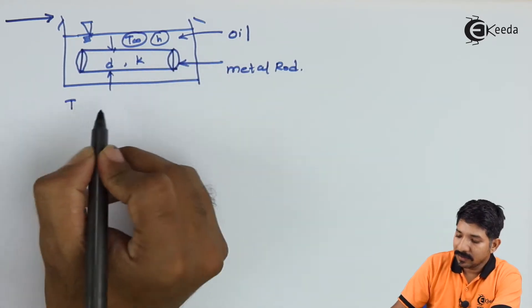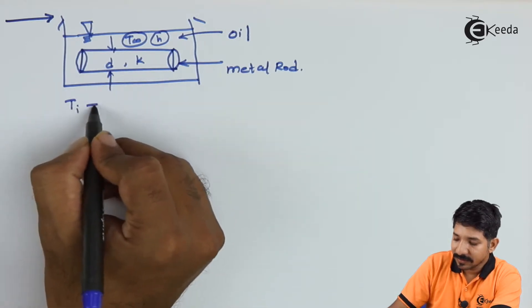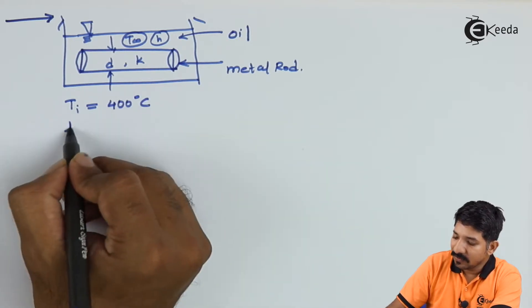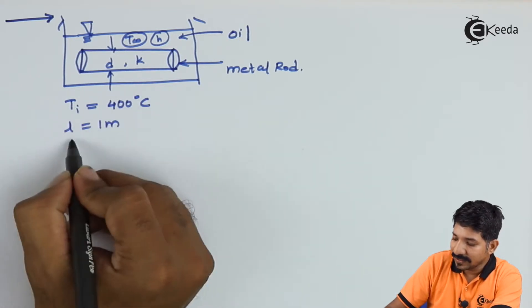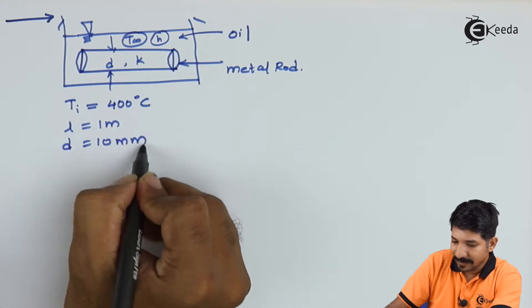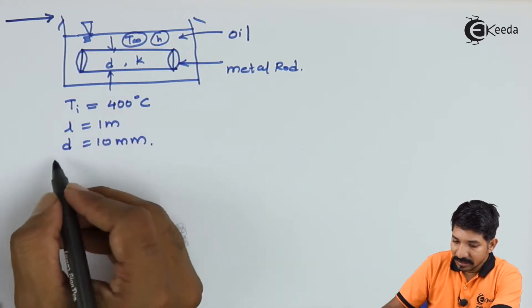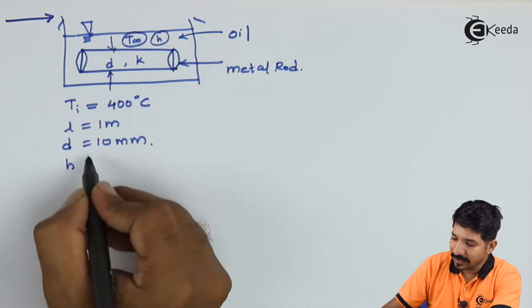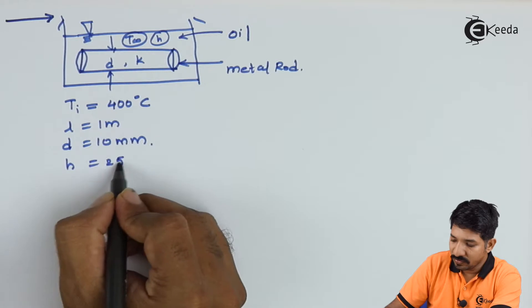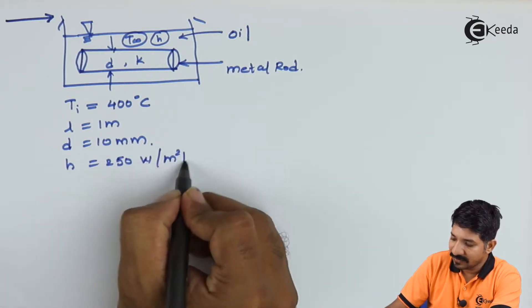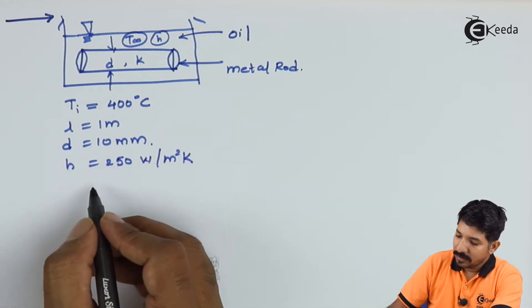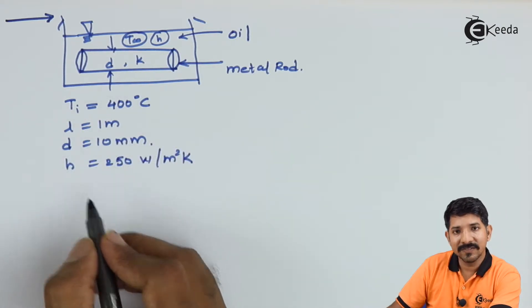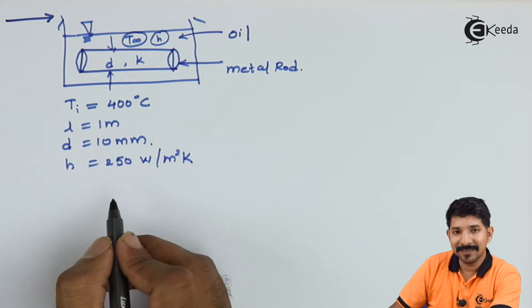The rod initial temperature they have given is 400 degree Celsius. The length of the rod is 1 meter and the diameter is 10 mm. The heat transfer coefficient H for the oil is 250 Watt per meter square Kelvin. Now with this information, they are asking us if the lumped heat capacity analysis can be applicable.